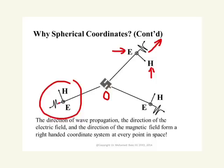This is a typical example of why spherical coordinates are very useful. In this case, the origin is the antenna, the electric field points in the phi direction, and H points in the theta direction. The direction of wave propagation is in the direction of ar. These coordinates are useful because they change from one point to another. Note that antennas can also radiate with the electric field in the theta direction — both polarizations are possible, but wave propagation is always in the outward radial direction.